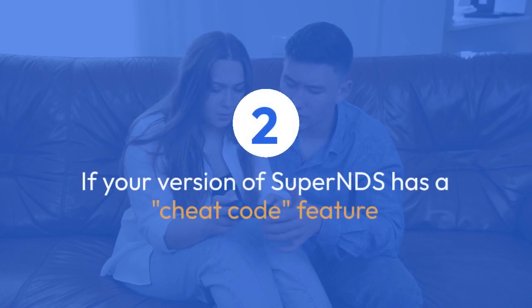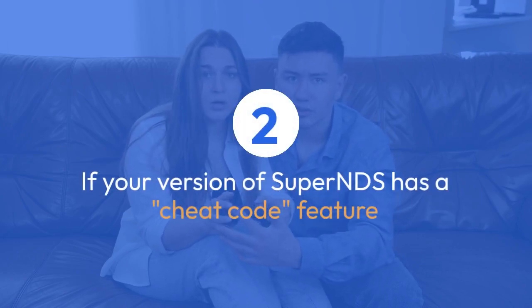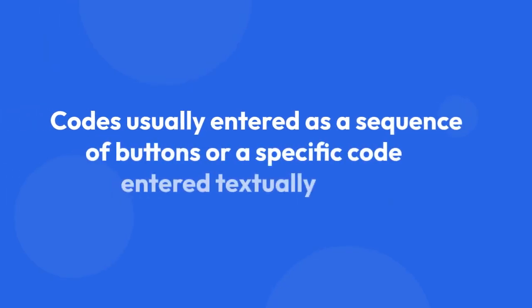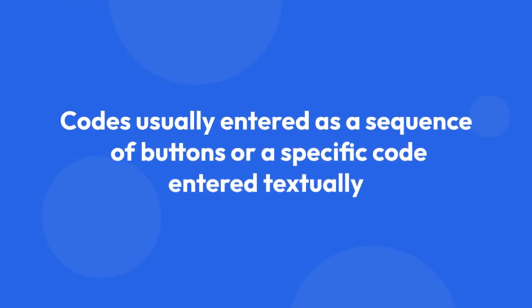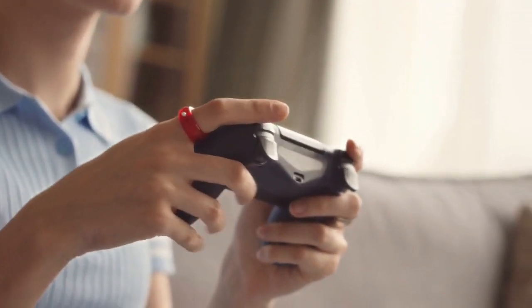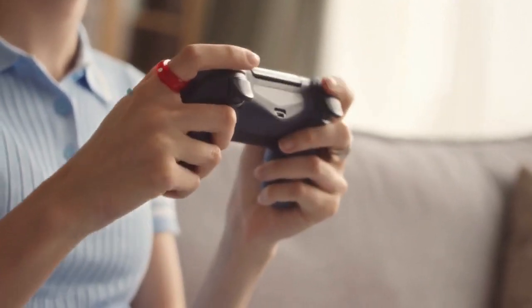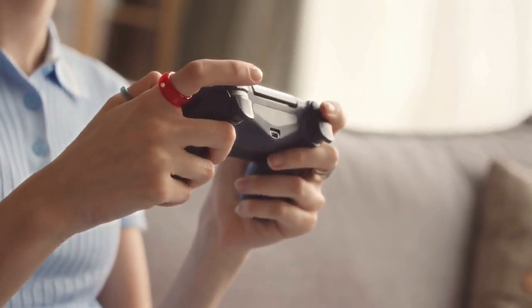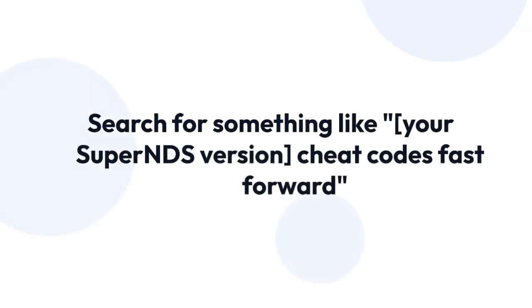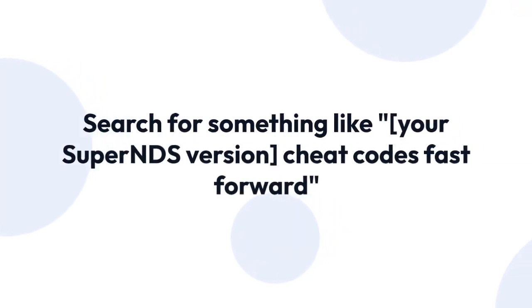Two. If your version of Super NDS has a cheat code feature, you might find fast-forwarding options available as a cheat code. These codes, usually entered as a sequence of buttons or a specific code entered textually, will affect the game's speed. Consult online resources or the emulator's documentation for available cheats — search something like your Super NDS version cheat codes fast-forward.